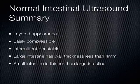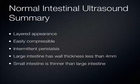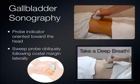To summarize what we've been talking about before we move on: normal intestinal ultrasound shows a nice layered appearance, is easily compressible, you should see intermittent peristalsis, and large intestine should have a wall thickness less than 4 millimeters. Small intestine is less than that. Moving on now to the gallbladder.